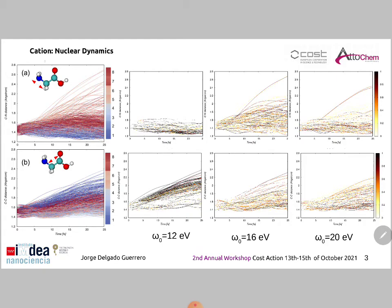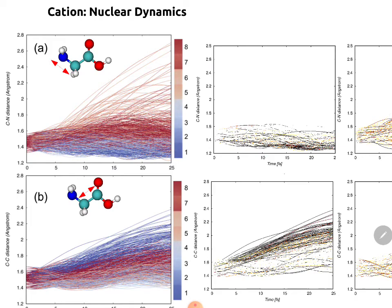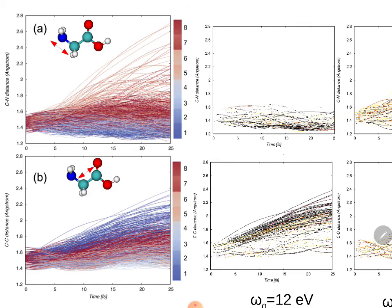Moving to the results, and in particular to the nuclear motion of the cation, what we observe here is the time evolution of the CN bond and the CC bond for all the cationic trajectories without accounting for the action of the pulse. Considering that the color bars indicate the cationic state in which the trajectory starts the propagation, we can conclude that CN elongation and fragmentation is associated to initial high cationic states, and CC elongation and fragmentation is associated to initial low cationic states.